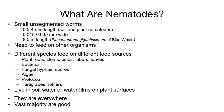Nematodes have to feed on other organisms — they don't grow their own food. They can feed on other nematodes, other soil organisms, or they can choose to feed on plants — what we call being a herbivore. That's really what we're talking about today. Different species feed on different food sources. The ones that feed on plant roots, stems, bulbs, tubers, and leaves are what we're most concerned about because of their effect in decreasing yield and quality of grain crops.